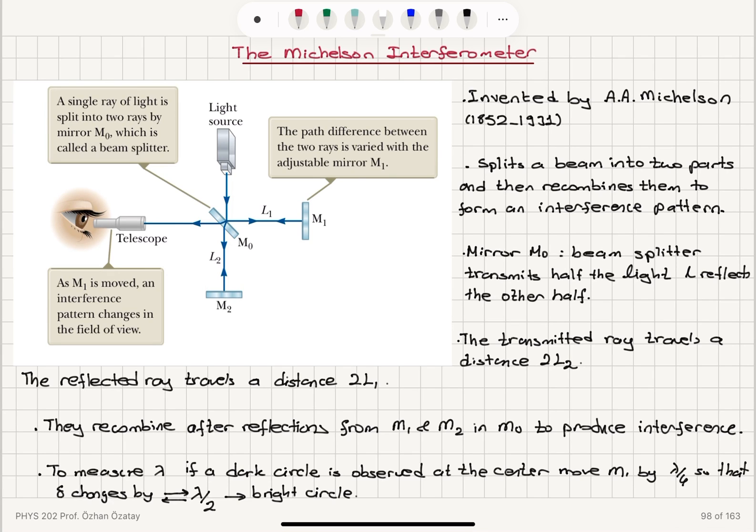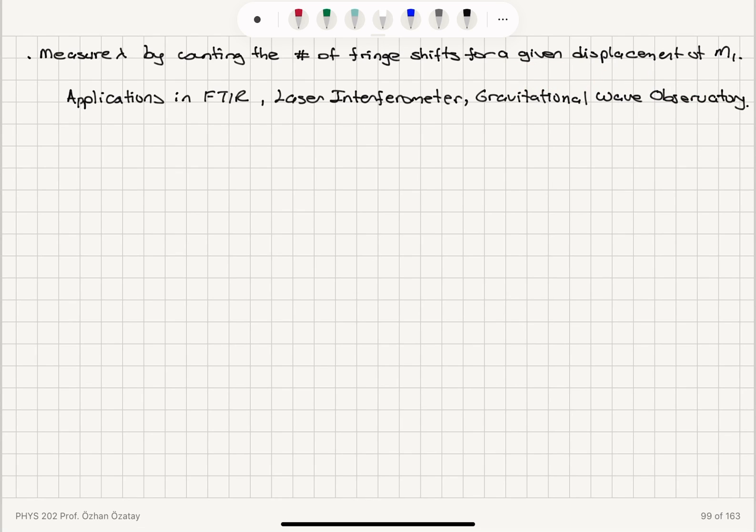And we're looking at the interference pattern of the reflected lights coming from M1 and M2 by watching it with this telescope at M0. And we vary the path difference between these two rays by changing the location of M1 so that a displacement of lambda over 4 in M1 corresponds to a fringe shift from dark to bright or bright to dark. So by counting the number of fringe shifts for a given displacement, we measure lambda.